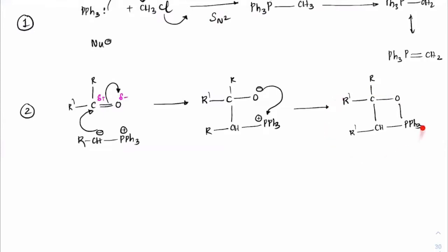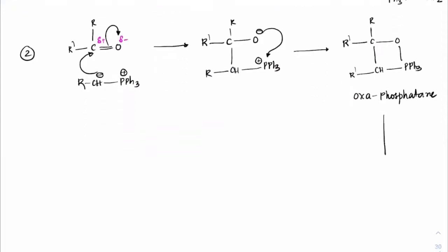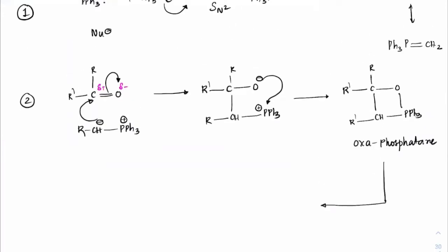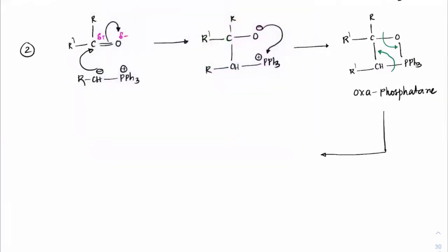This forms a four-membered ring called oxaphosphetane. Since four-membered rings are unstable, the C–O bond breaks and the C–P bond breaks simultaneously. What we eventually get is R'CR=CHR' plus Ph₃P=O.